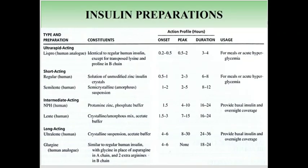There are four types of insulin preparations. First, ultra-rapid acting, which includes Lispro, used for meals or acute hyperglycemia. Second, short acting, which includes regular and semilente, also used for meals or acute hyperglycemia. Third, intermediate acting, which includes NPH and lente, used to provide basal insulin and overnight coverage. Fourth, long acting, which includes ultralente and glargine, also providing basal insulin and overnight coverage.